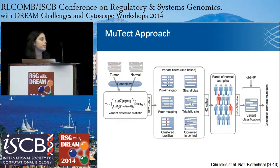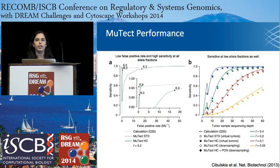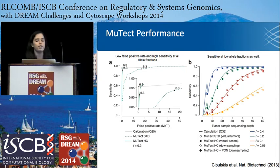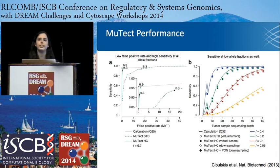The original evaluation performance from the MuTect paper by Christian Cibulskis about two years ago is shown here. In panel A, with a LOD cutoff of 6.3, we were able to achieve a low false positive rate while still maintaining high sensitivity. Breaking this down by allele fraction and depth in figure B, you can see that even at low allele fraction — like 10% — if you have around 60X coverage in the tumor, you have around 95% sensitivity. Currently, many tumors in TCGA and other projects are at around 100X coverage, so our sensitivity is only improved from what this graph shows.